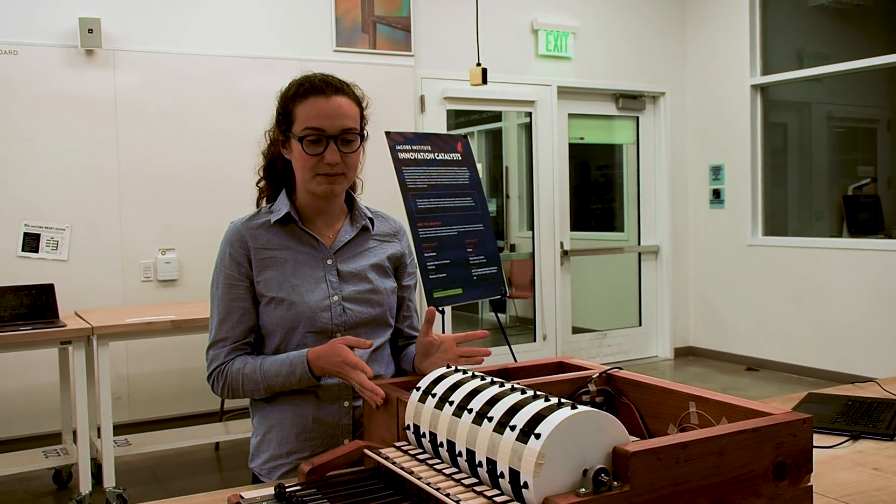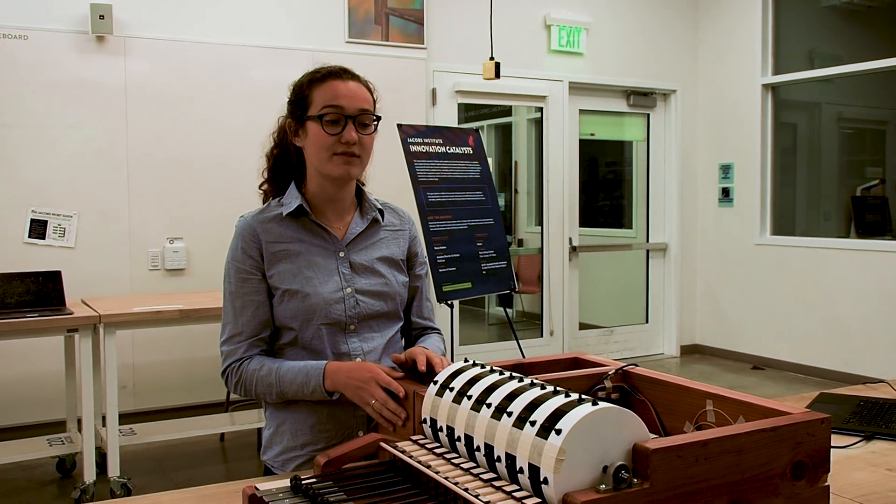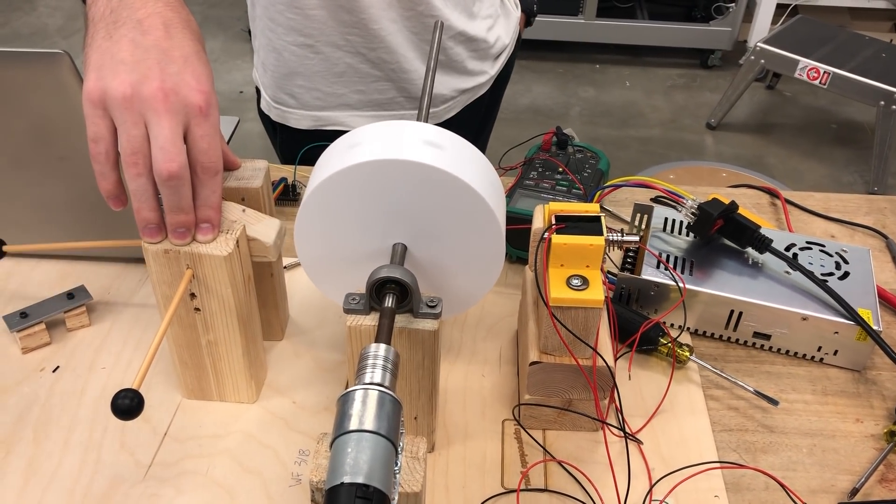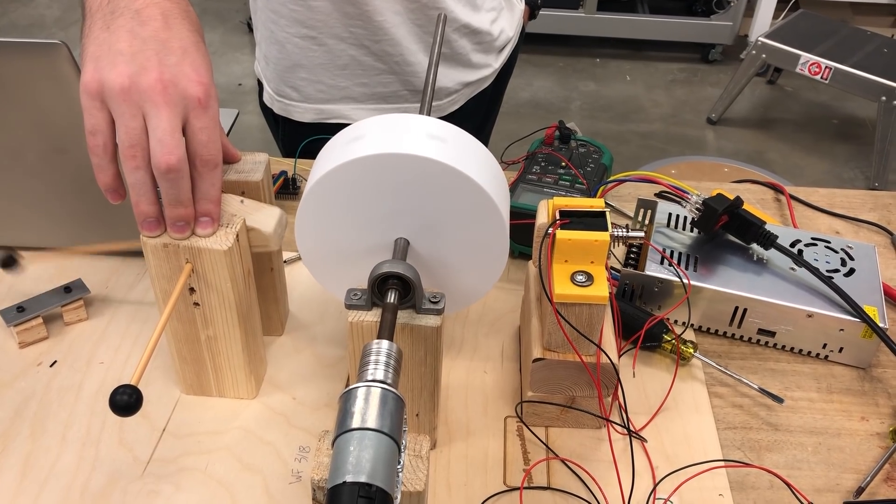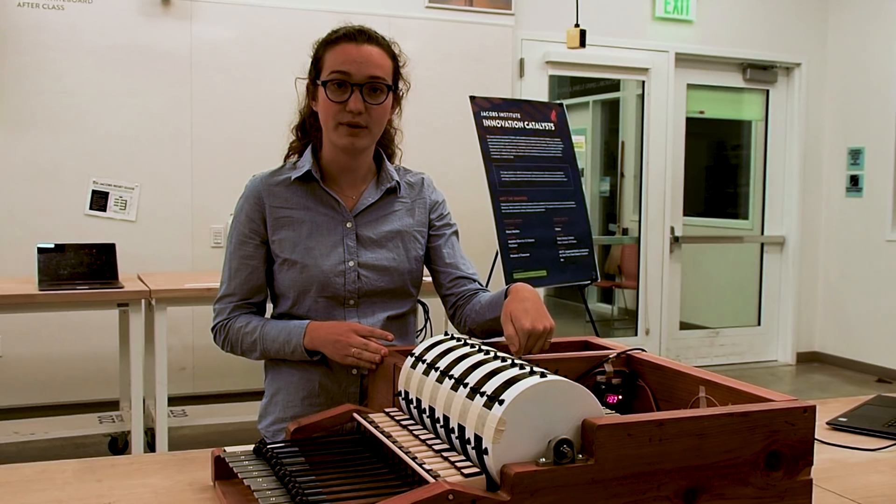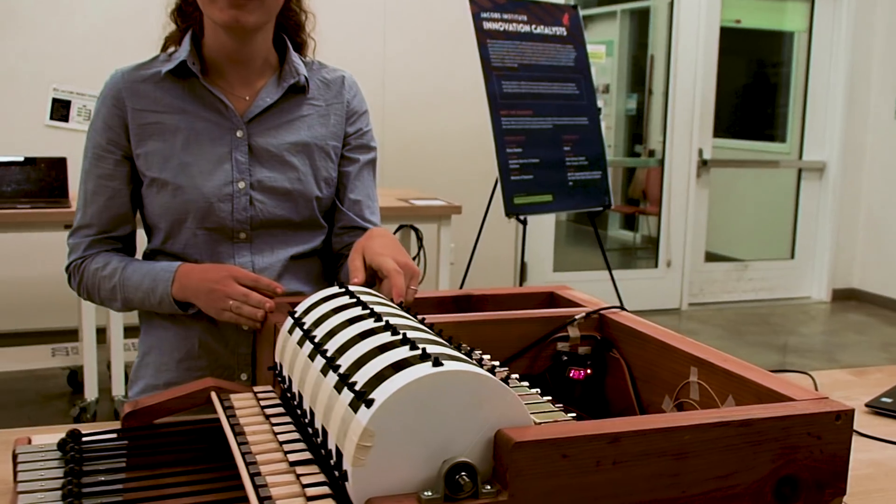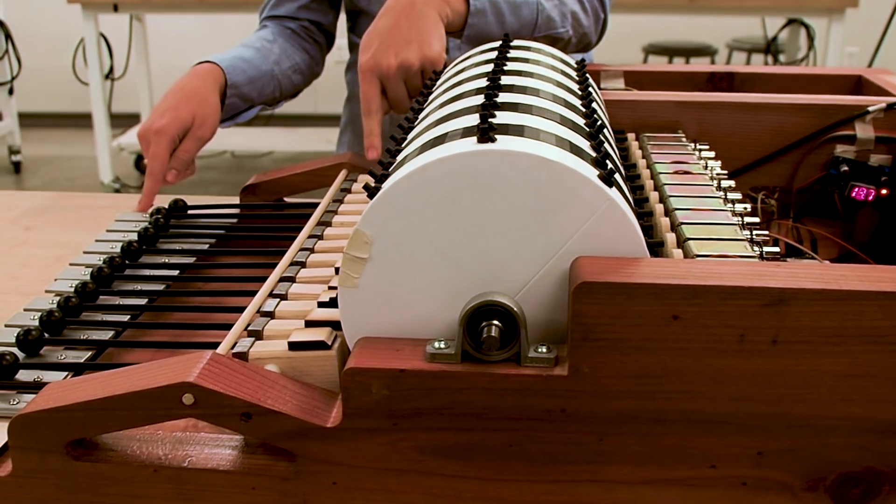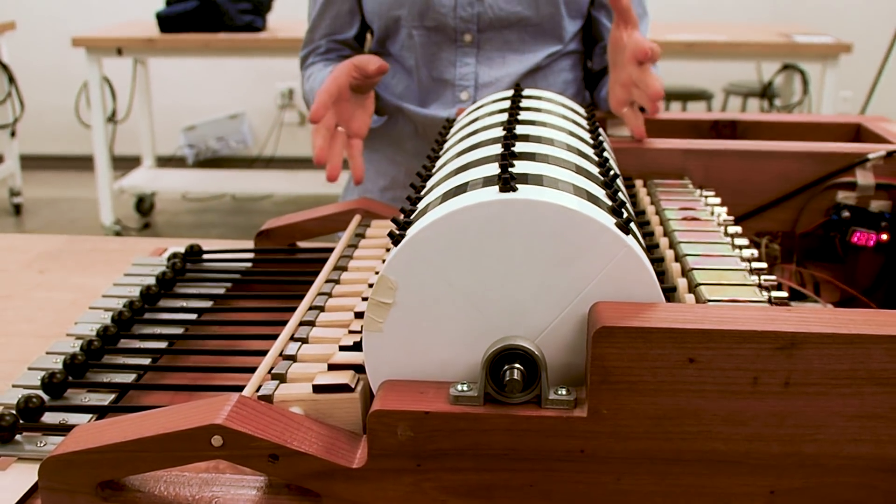We created three prototypes before getting to this final version that you see here, the first of which was just to validate our method of creating sound. So we wanted to make sure that linear actuator solenoids, hitting clip pens, which then actuate a flipper, which makes a mallet move and play a note, was a viable way of creating reliable sound.